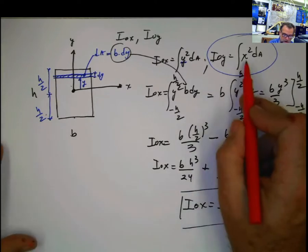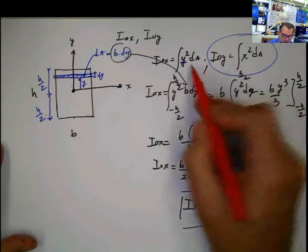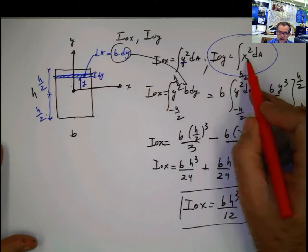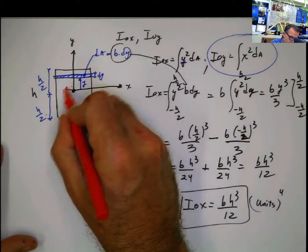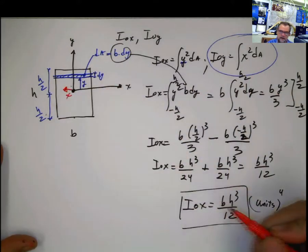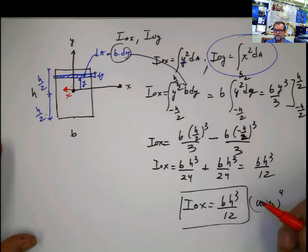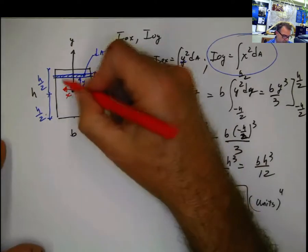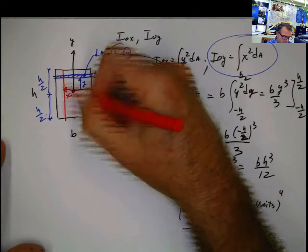Once again, before I was measuring y because I used this. Now I'm going to measure x. Well, I'm going to measure x. This is x. If this is x, I'm going to try to select the differential of area perpendicular to that x, which would be this one here.